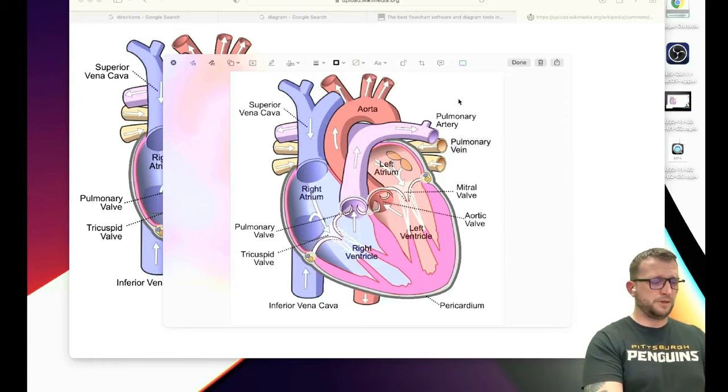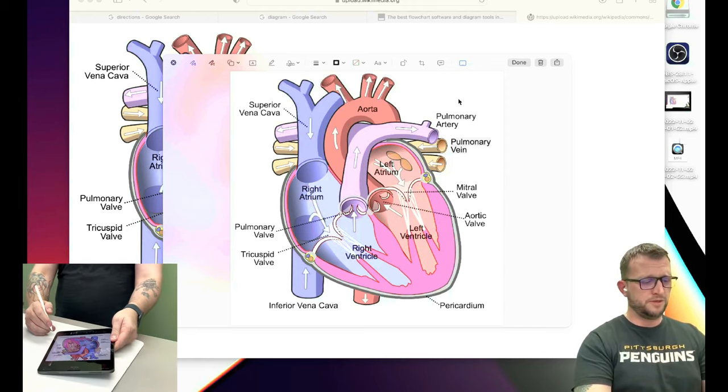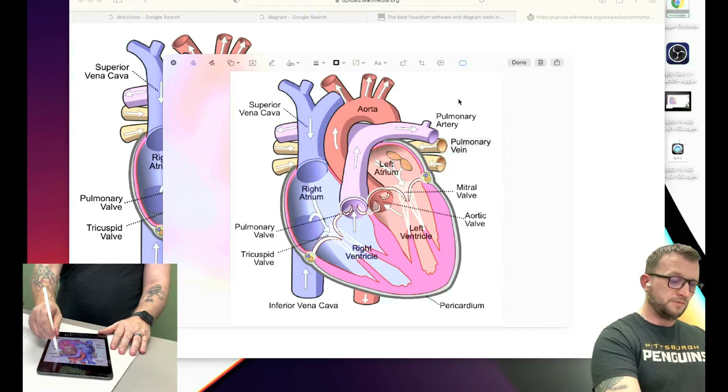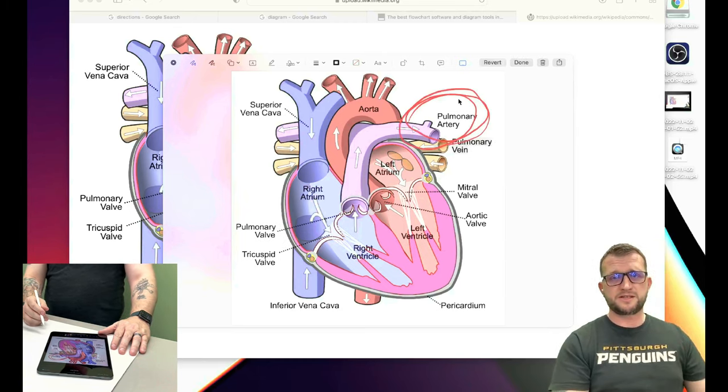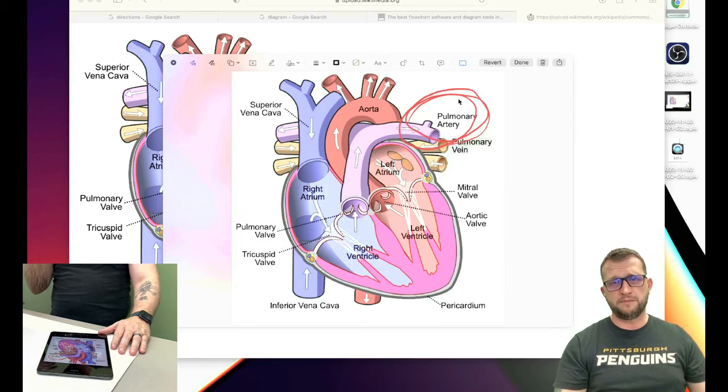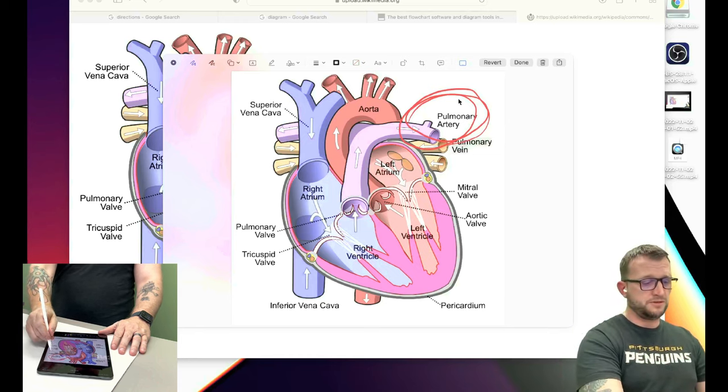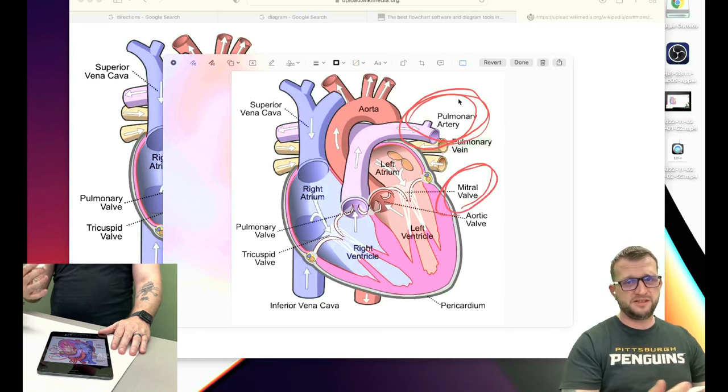But as soon as I do that, you're going to see it pop up on the iPad there right away. And when I start doing my annotations, so if I circle this pulmonary artery, it's going to immediately pop up on the Mac. It's very fast. So if I do it here, it's almost instantly popping up right there with very low latency.